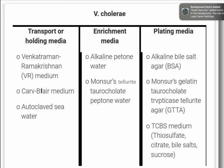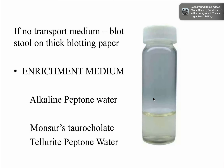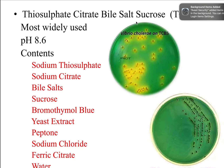Enrichment media include alkaline peptone water and Monsur's taurocholate tellurite peptone water. For selective plating, alkaline bile salt and Monsur's gelatin taurocholate trypticase tellurite agar (GTTA) are commonly used. Thiosulphate citrate bile salt sucrose (TCBS) agar is the most commonly used medium with a pH of 8.6. This is the VR medium used for transportation, the Kariblair medium, and the enrichment media, along with how Vibrio cholerae looks on TCBS medium.